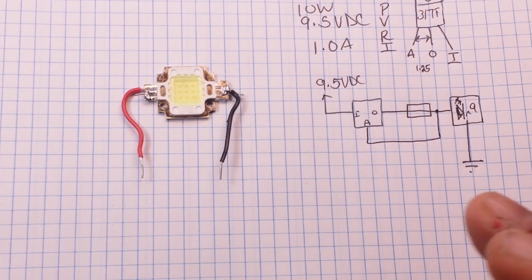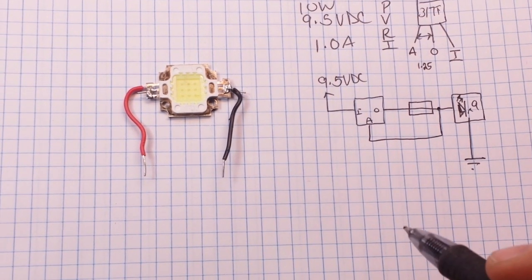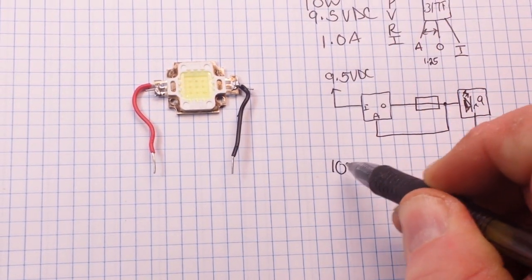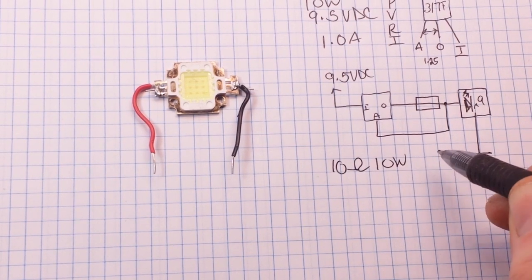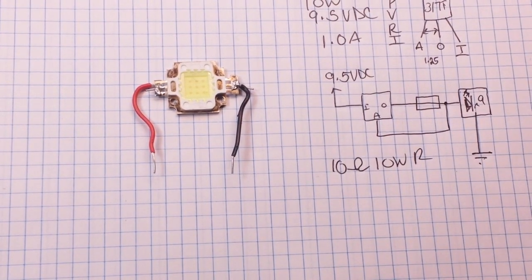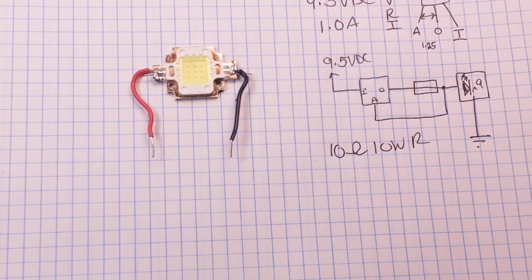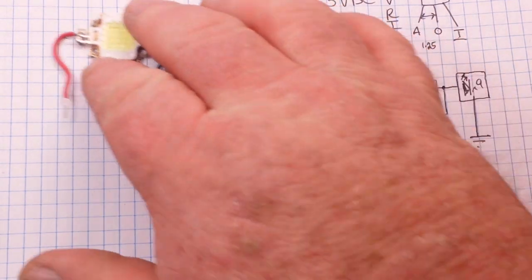So what we're going to do is we are going to put in, in this case, a 10 ohm, 10 watt resistor. So now we could recalculate our circuit, but you know, it's going to be good enough. So let's hook it up.